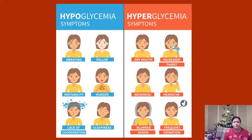Hypoglycemia means low blood sugar; hyperglycemia means too high blood sugar. They show particular symptoms — this is just for general interest and not things you could get examined on.